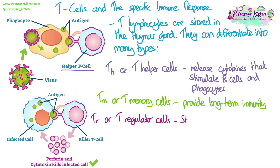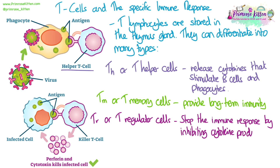T regulator, or TR cells, actually stop the immune response once the pathogen has been dealt with, by inhibiting the cytokine production that drives the specific immune response.